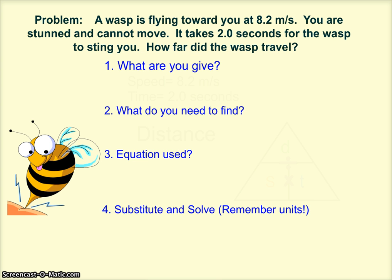The wasp is flying towards you at 8.2 meters per second. You are stunned and cannot move. It takes two seconds for the wasp to sting you. How far did the wasp travel? This time it's asking for distance.